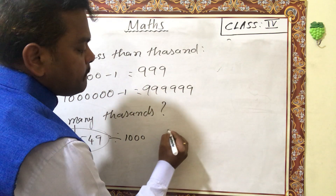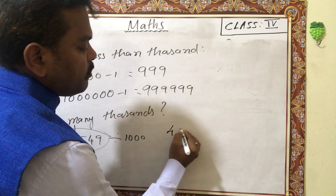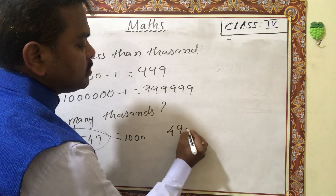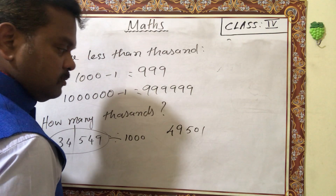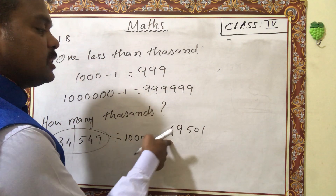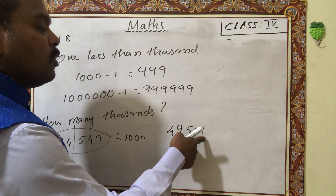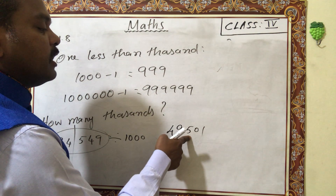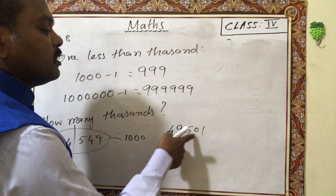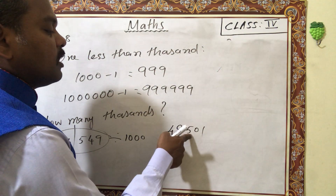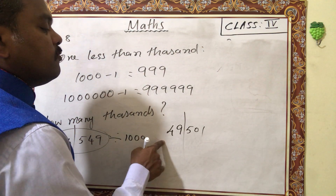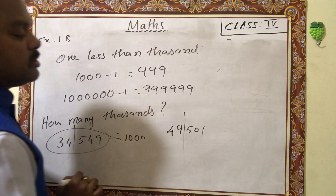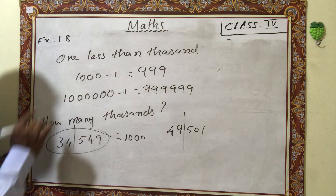One more question: how many thousands are there? Mark the ones, tens, hundreds, thousands positions — there are 49 thousands in that number. And one more: mark the place values — this many thousands are in that number. This is the easy way to find how many thousands are in a given number.